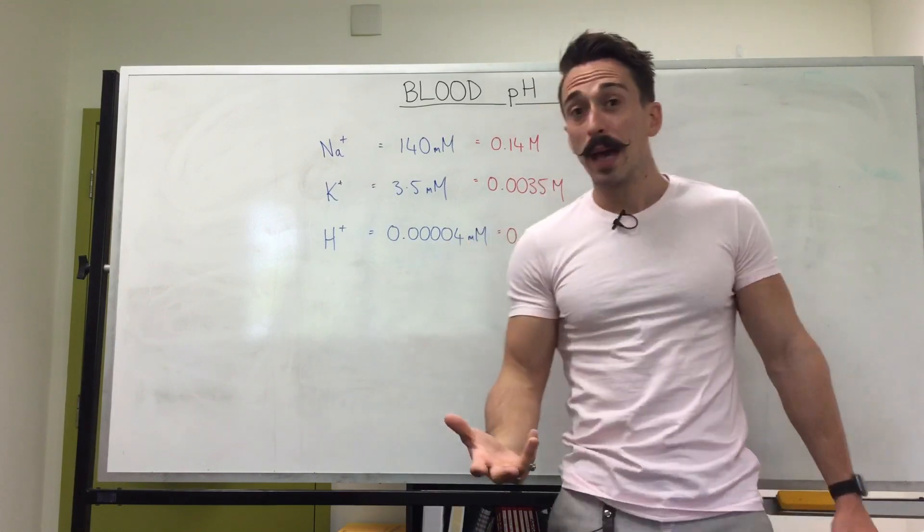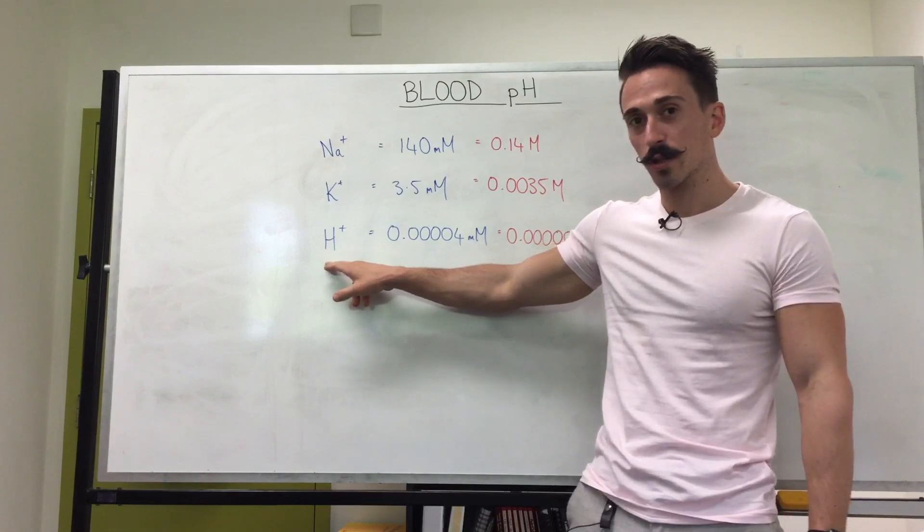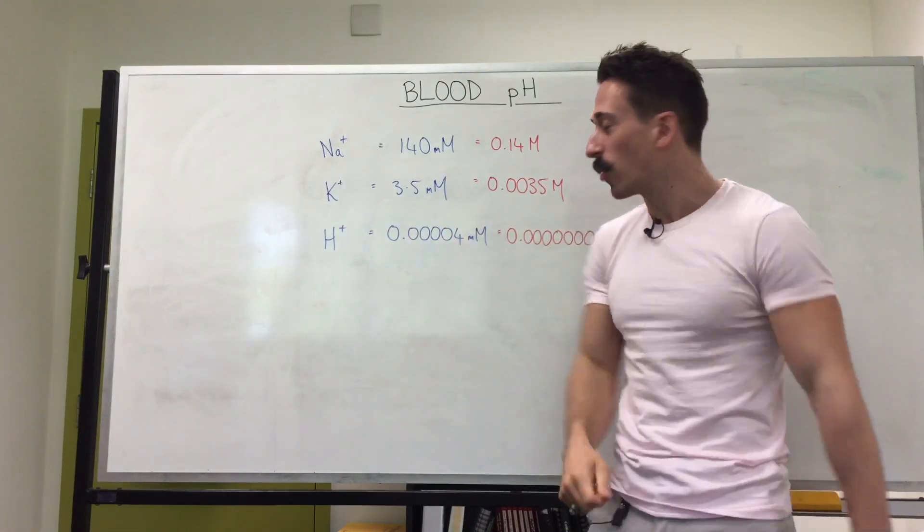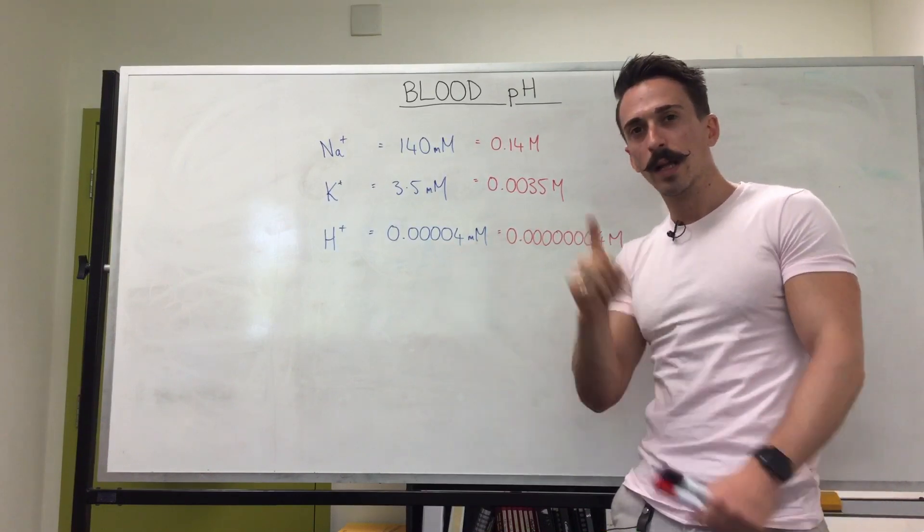This is where pH comes into play because in all honesty pH is simply the measurement of hydrogen ion concentration within the blood. It's just another way of writing 0.00004 millimolar. Let's take a look.